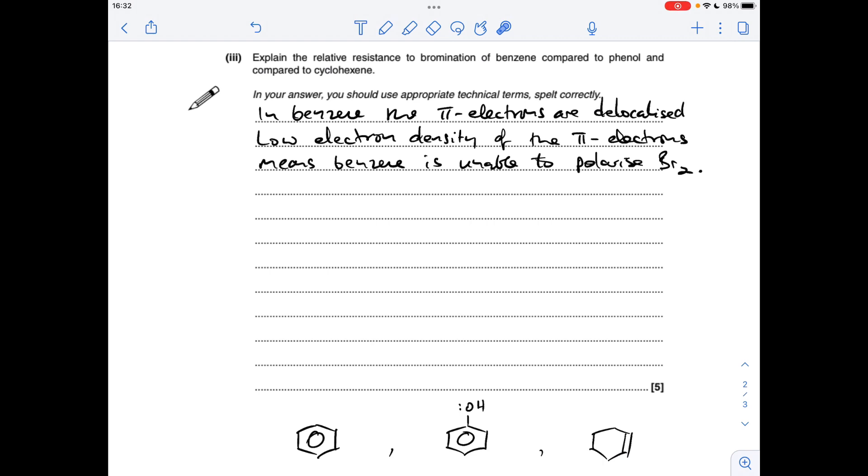So that's going to raise the electron density of the pi-electrons, which means that it is able to polarise Br2, and therefore they will attract each other.